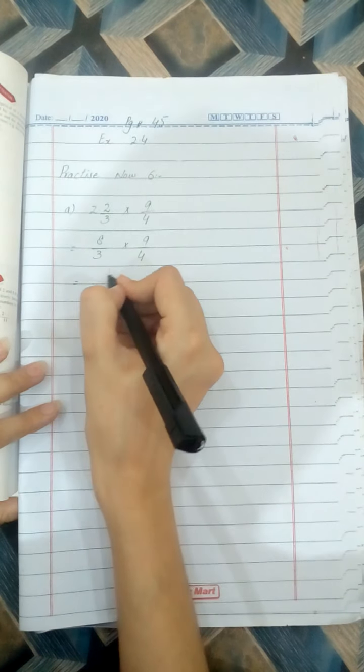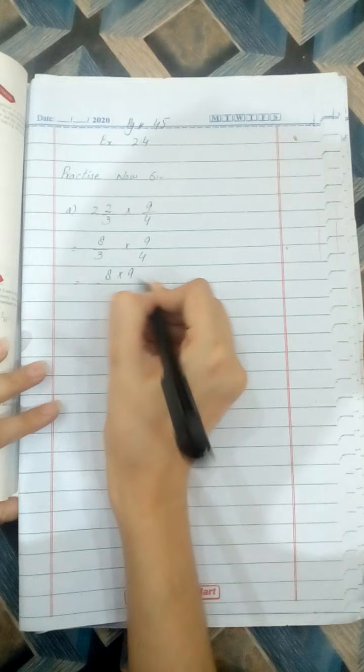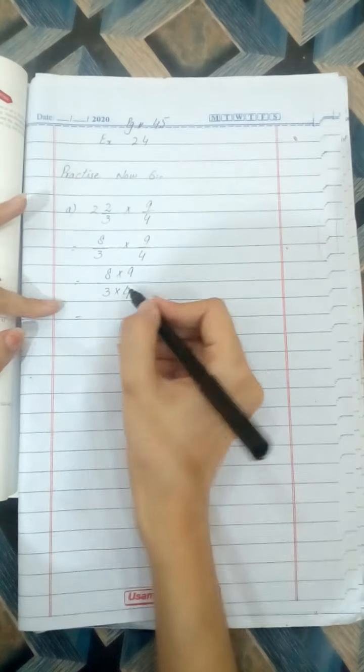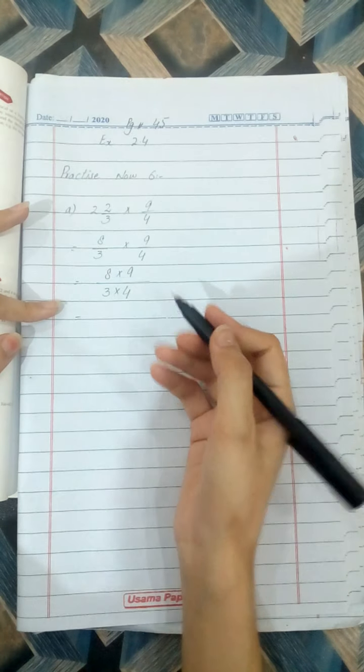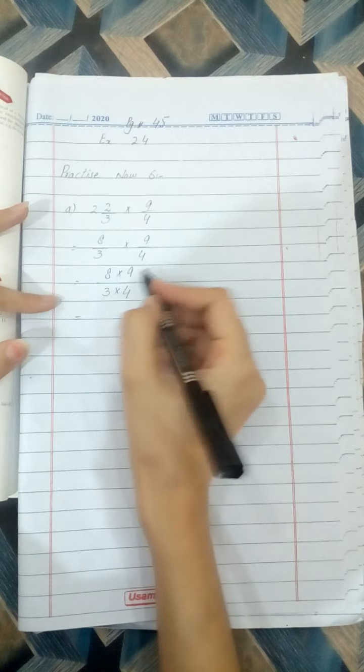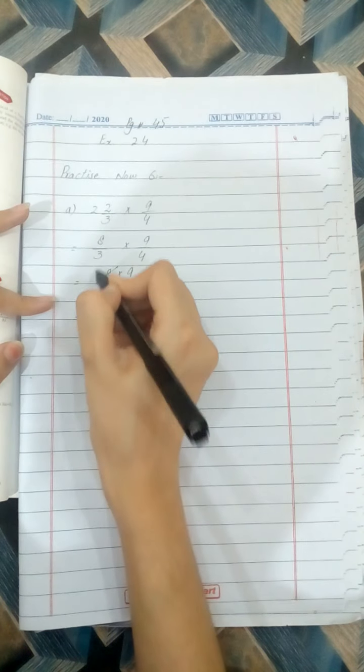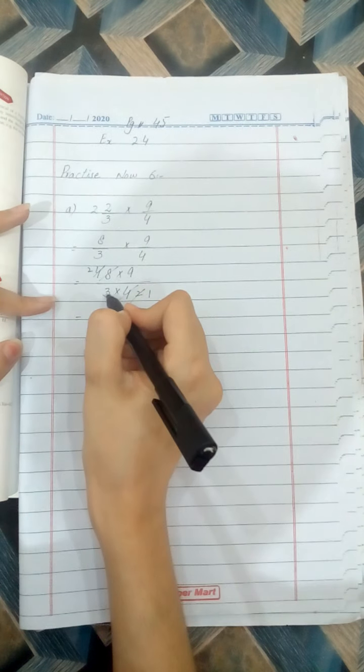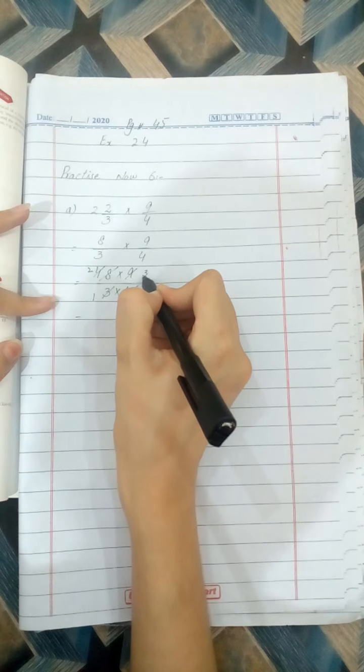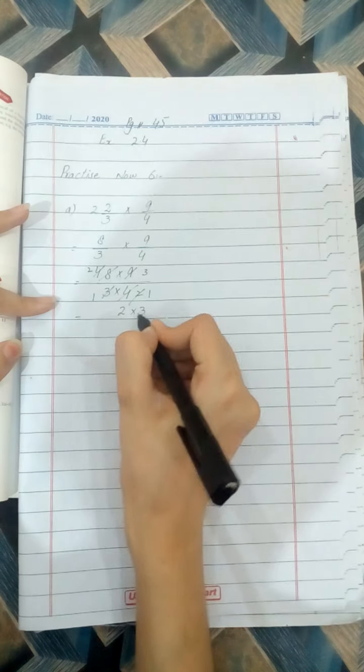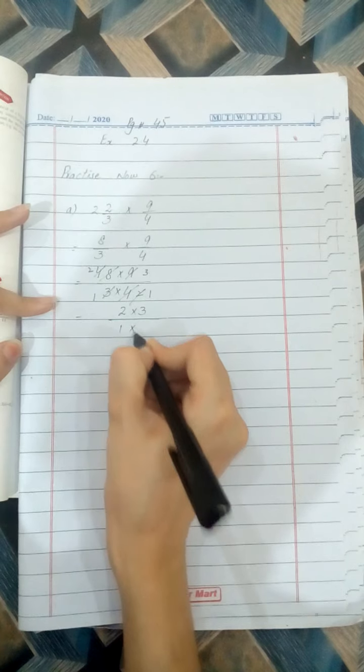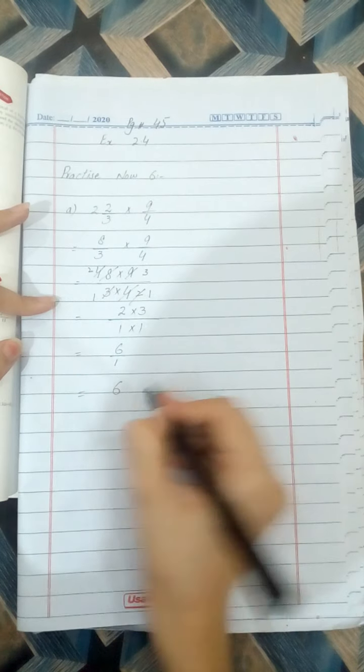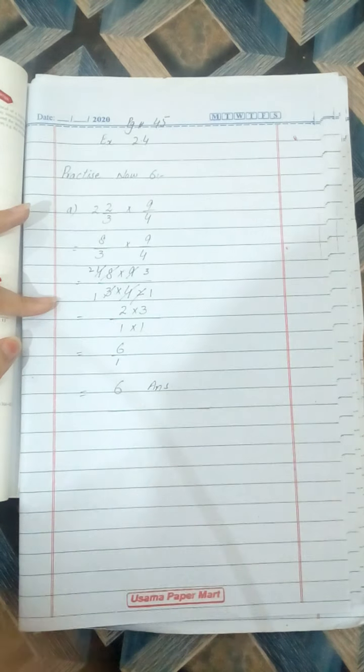Simply multiply the numerator with the numerator and denominator with the denominator. 8 multiply by 9 divided by 3 multiply by 4. Now simplify it. Read the table common, just cutting step, that is common factor. 2 times 4 is 8, 2 and 4, 2 and 2, and 3 and 3, 3 times 3 is 9. 2 multiply by 3, 1 multiply by 1, 2 times 3 is 6 by 1, that is also 6. This is the answer of our question, clear students.